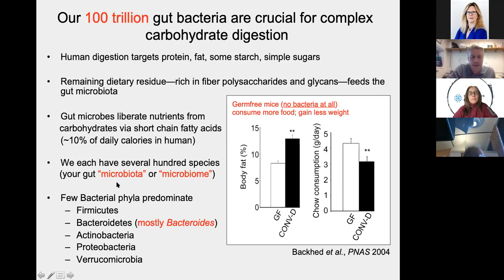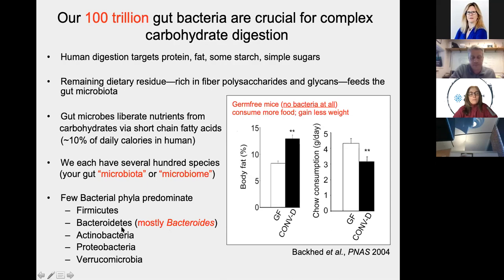We each have several hundred species composing our microbiota or microbiome — I'll use these terms interchangeably. Of the dozens of extant bacterial phyla on Earth, really only a few have evolved to colonize the gut of humans and other mammals: the Firmicutes, Bacteroidetes, Actinobacteria, Proteobacteria, and Verrucomicrobia. We've historically focused our studies on members of the genus Bacteroides, which are prominent at least in industrialized humans.